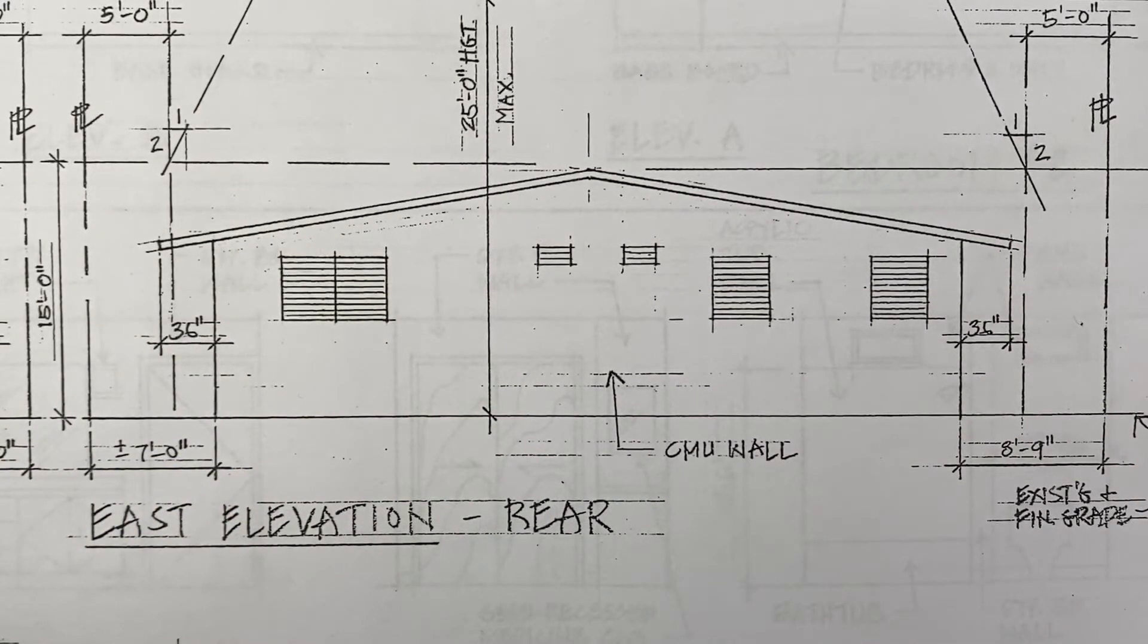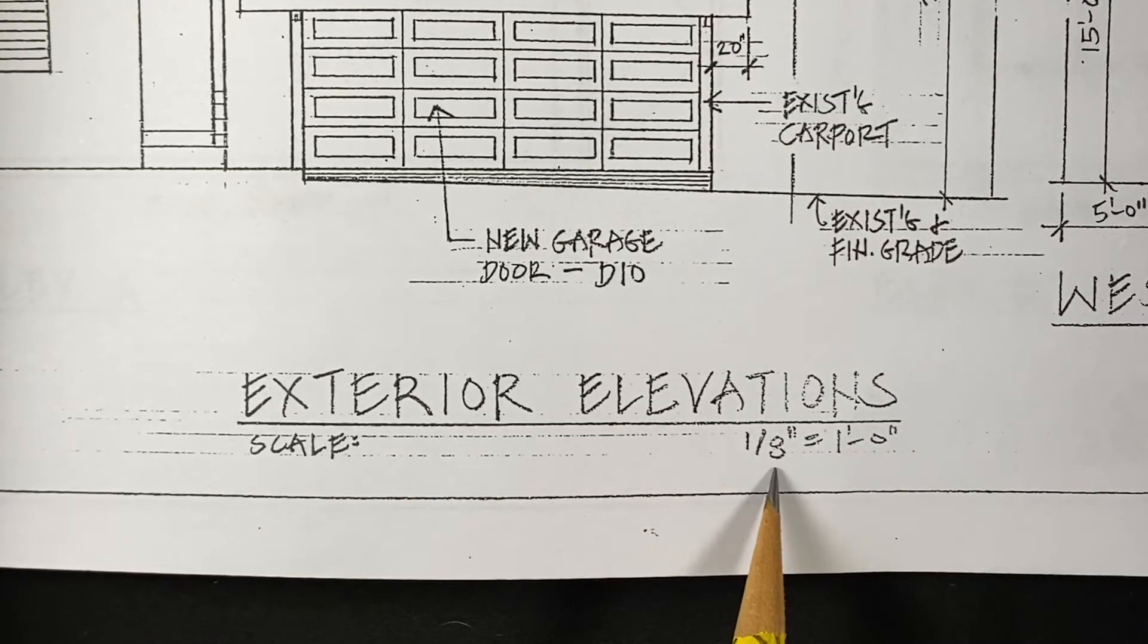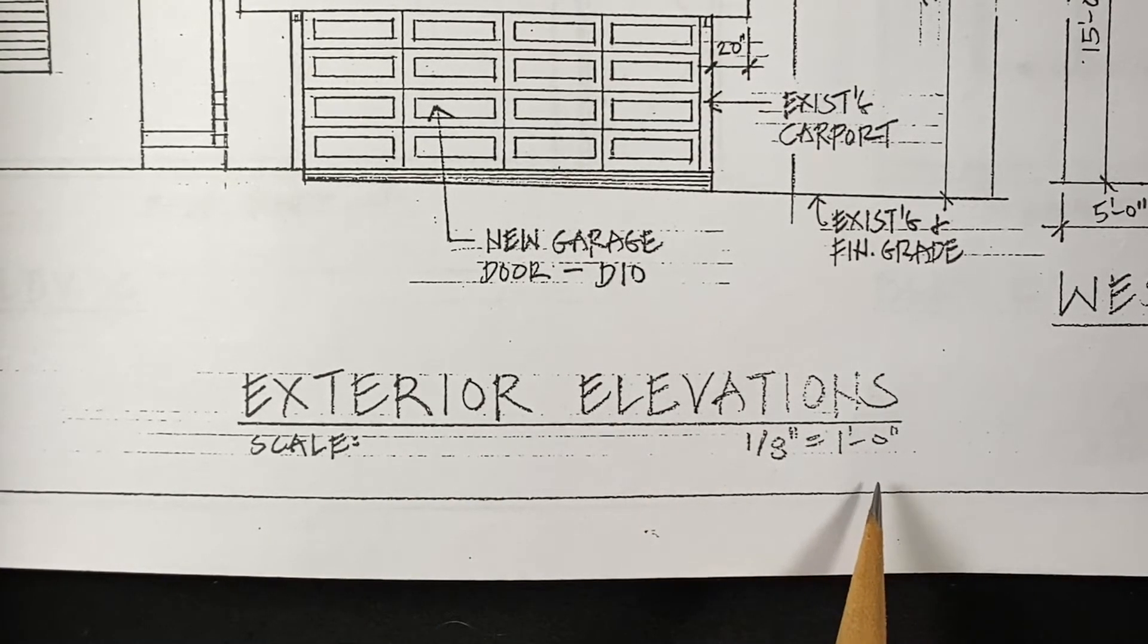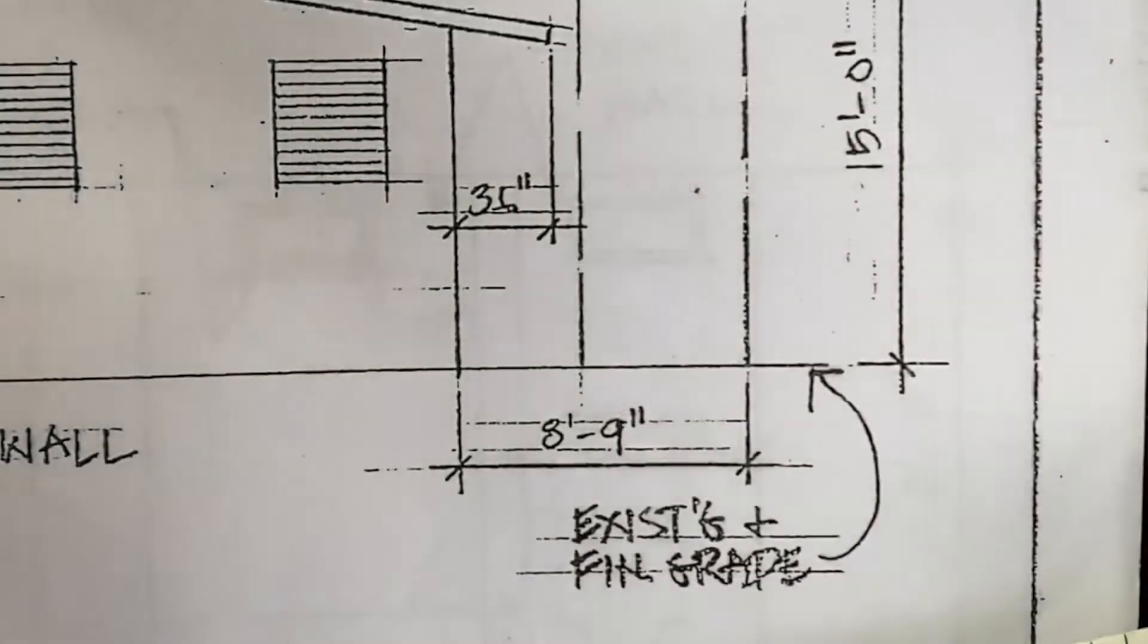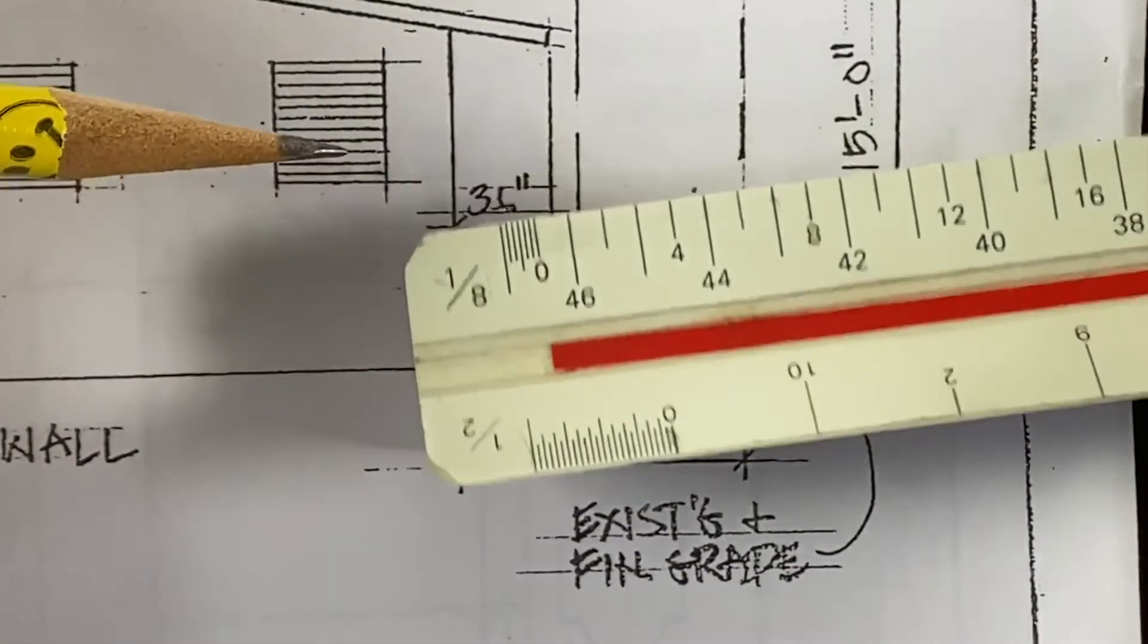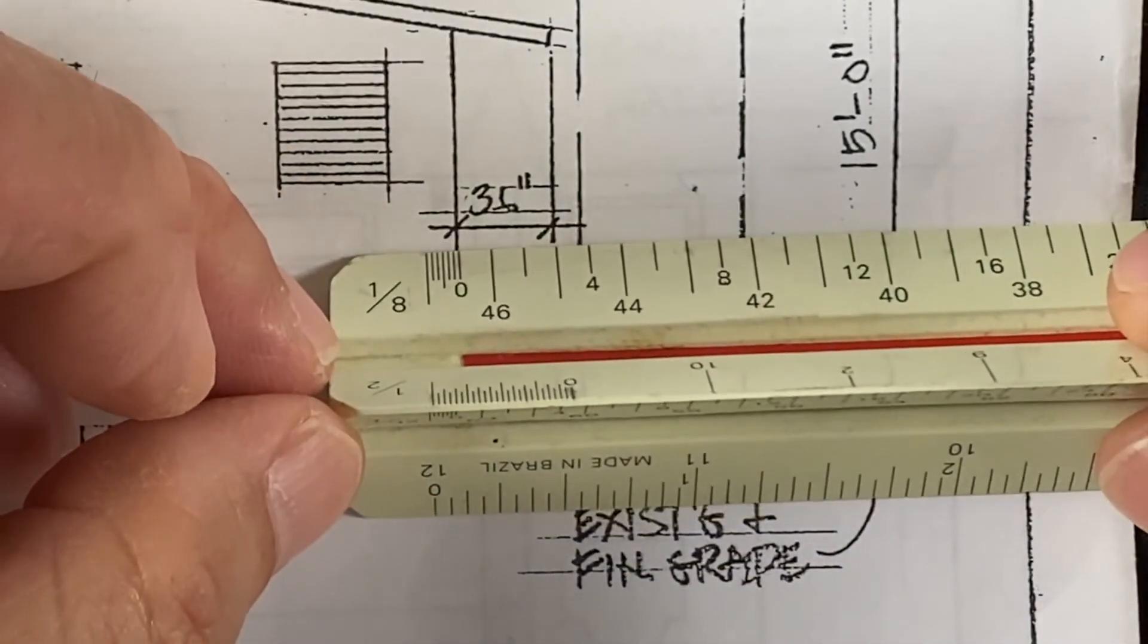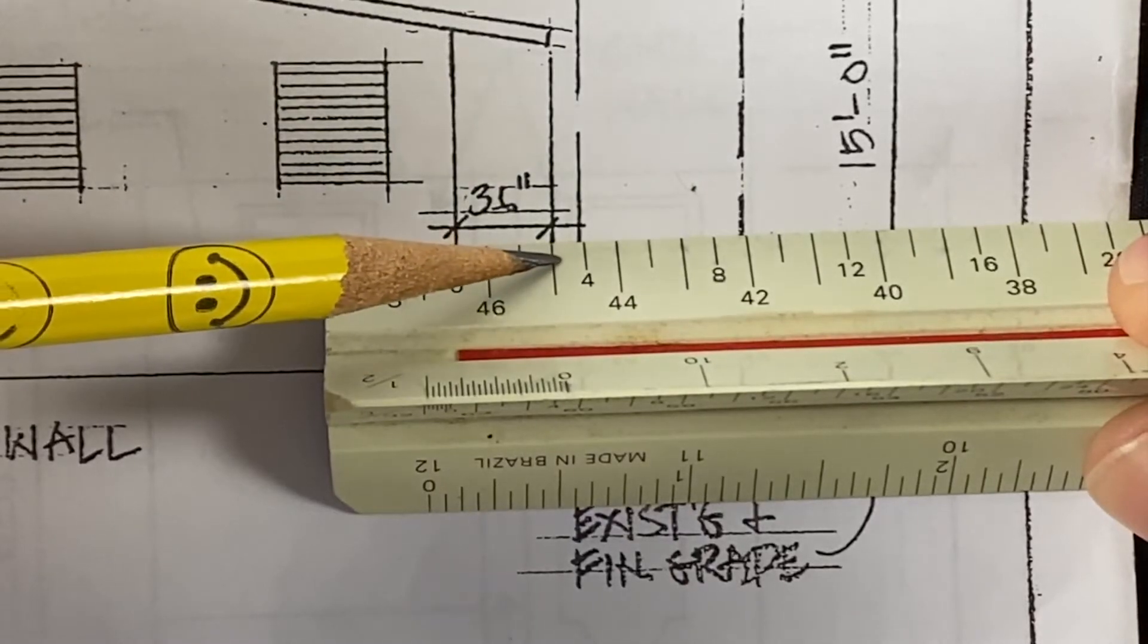And another example is this exterior elevation with scale of one eighth inch equals a foot. We'll refer to the eight inch scale and measure or verify this 36 inch or three feet dimension. One, two, three.